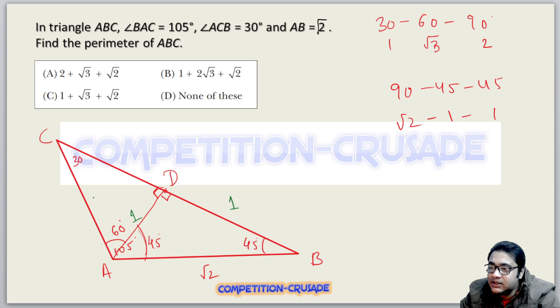Now in triangle ACD, the side opposite to 30 degrees is already one. So the side opposite to 60 degrees will invariably be root 3, and the side opposite to 90 degrees will be two.